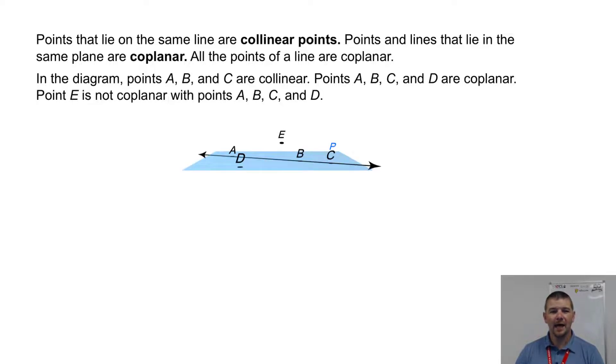In the diagram, points A, B, and C are collinear. Points A, B, C, and D are coplanar. Point E is not coplanar; notice how it sits in space not in the plane, but it is not coplanar with the points A, B, C, and D.